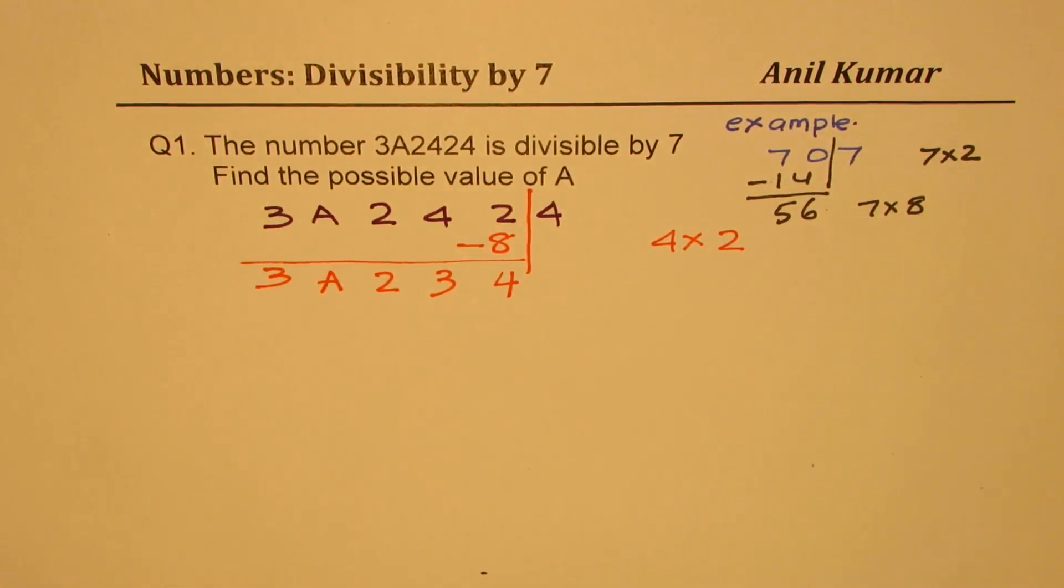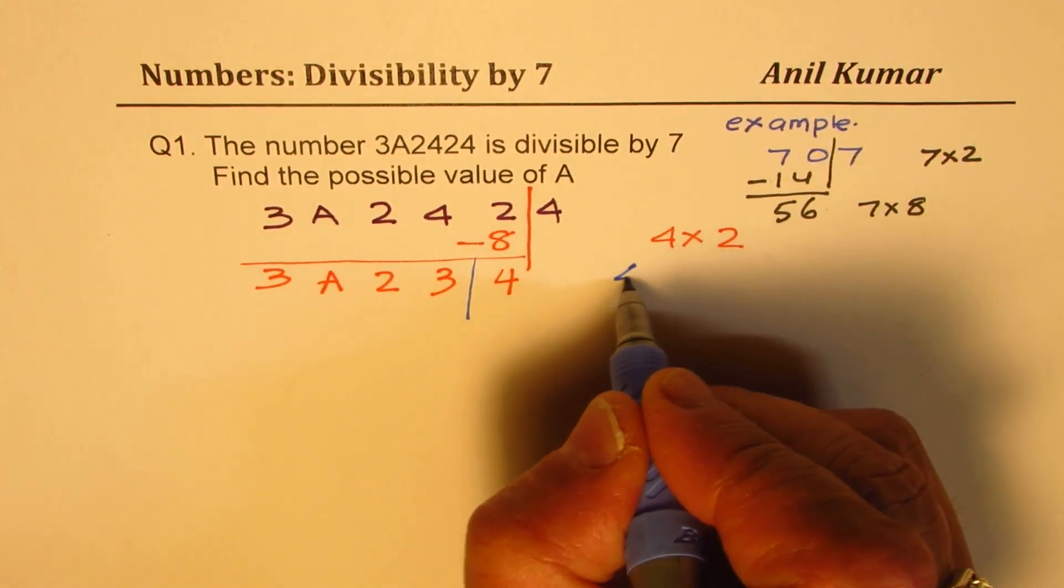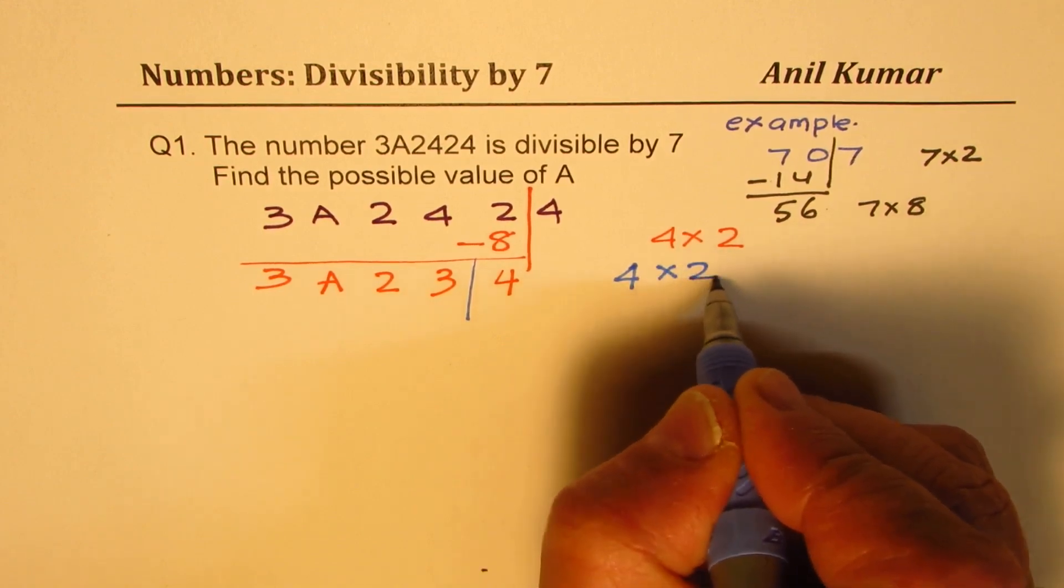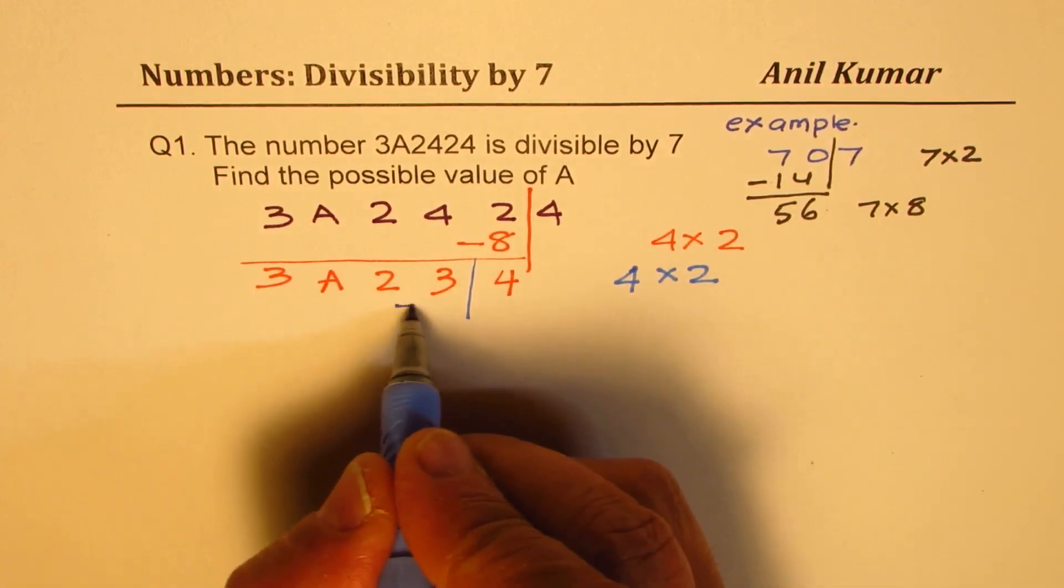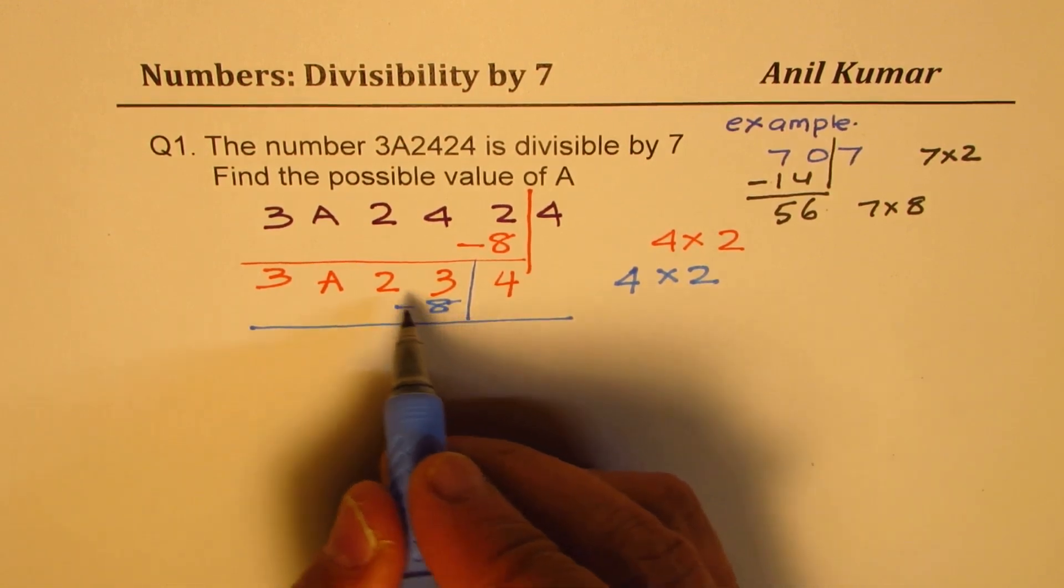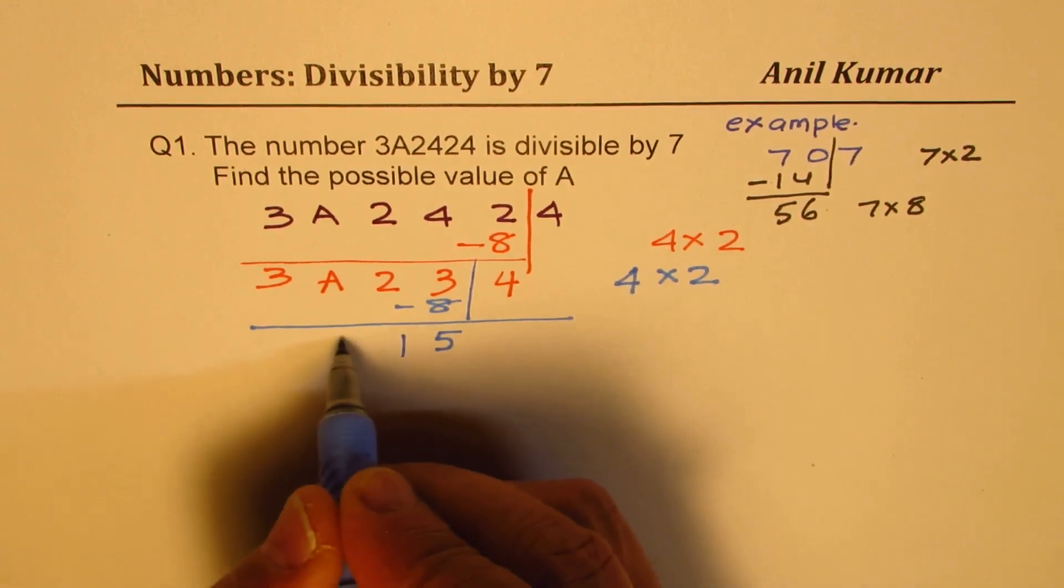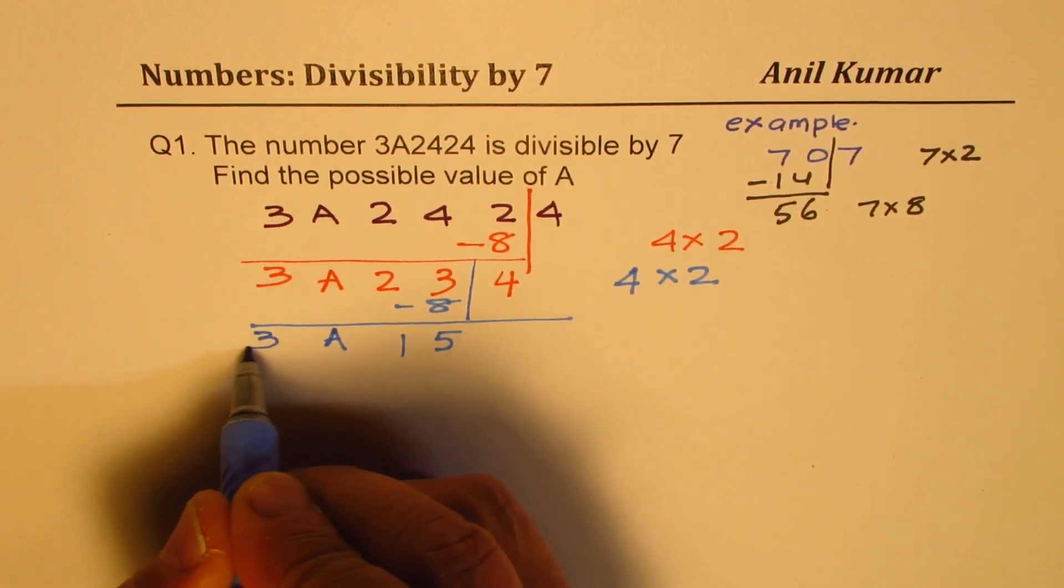Now, we have 4 as the last digit, we are going to multiply this 4 by 2. So we again get 8, so we'll take away 8 from remaining digits. So we get 13 take away 8 is 5, 1, A and the number 3.